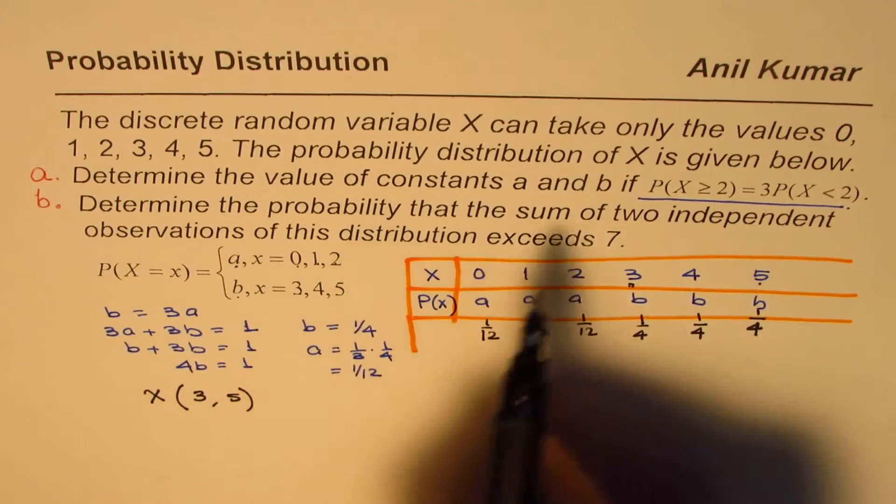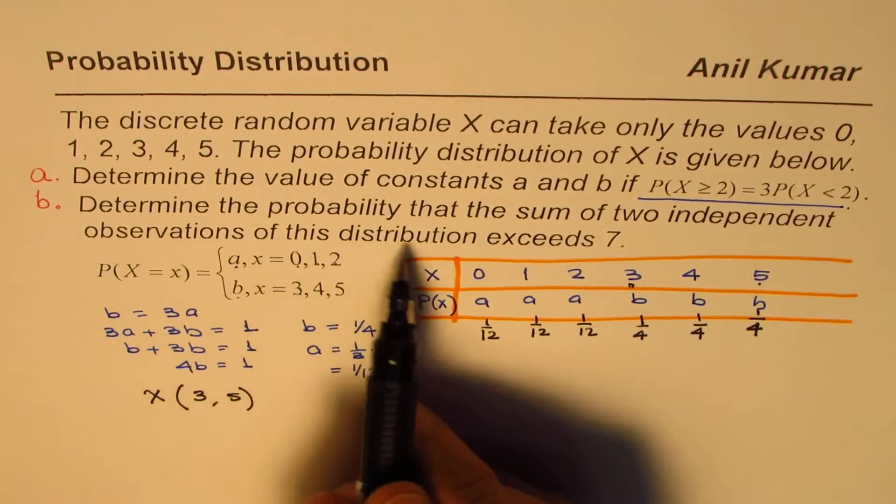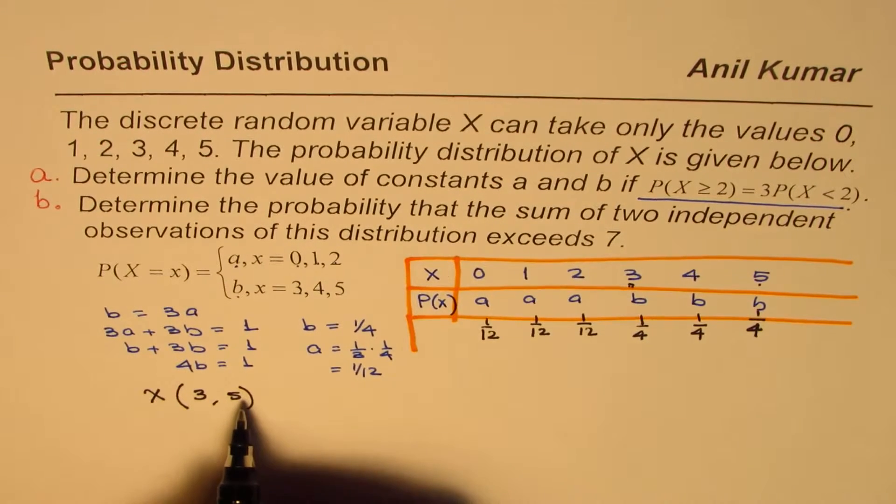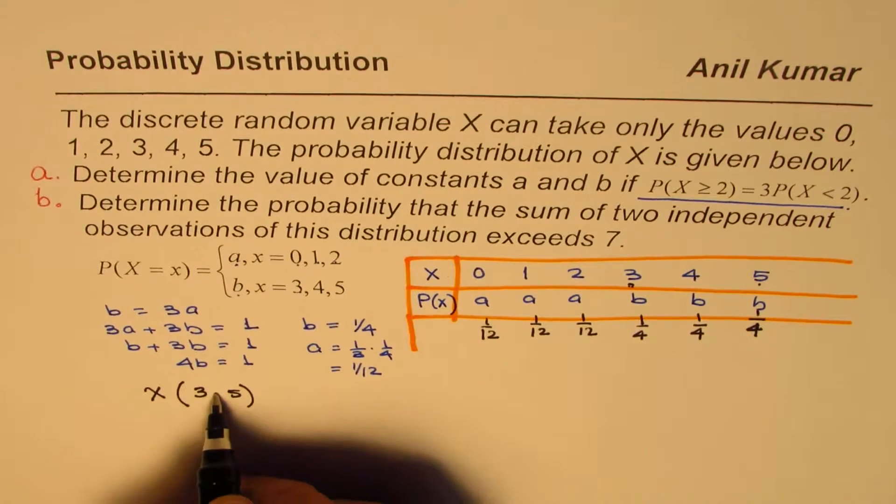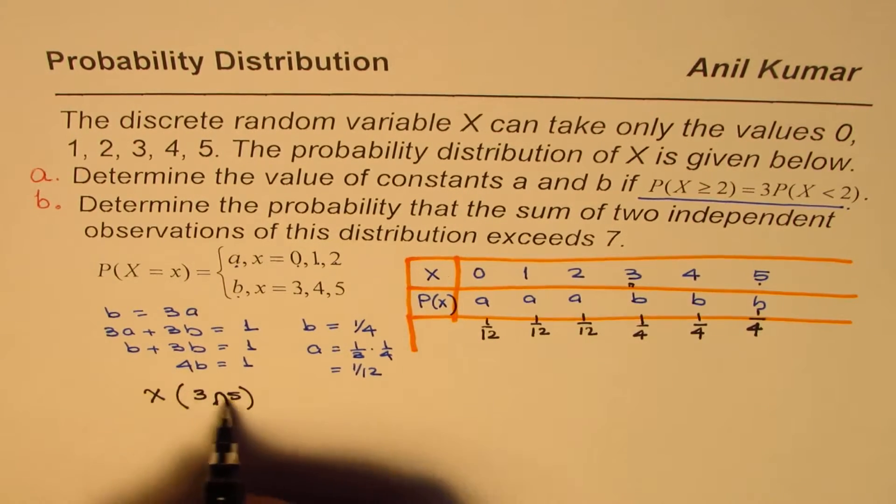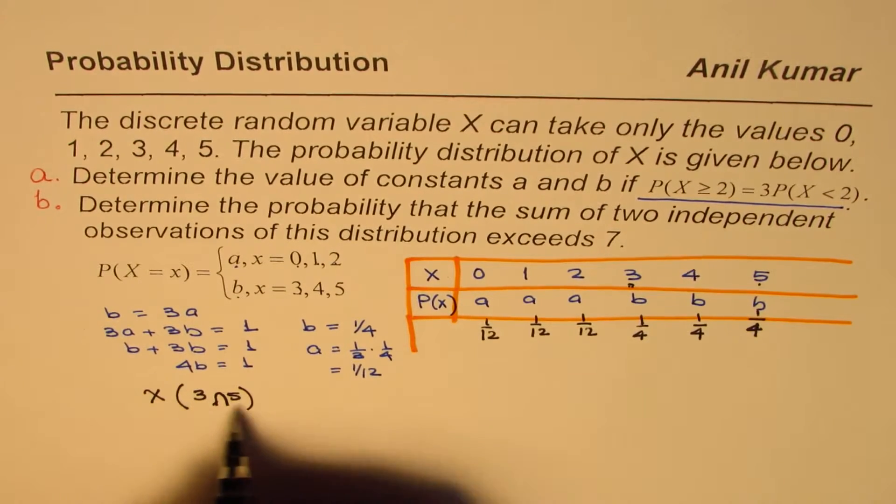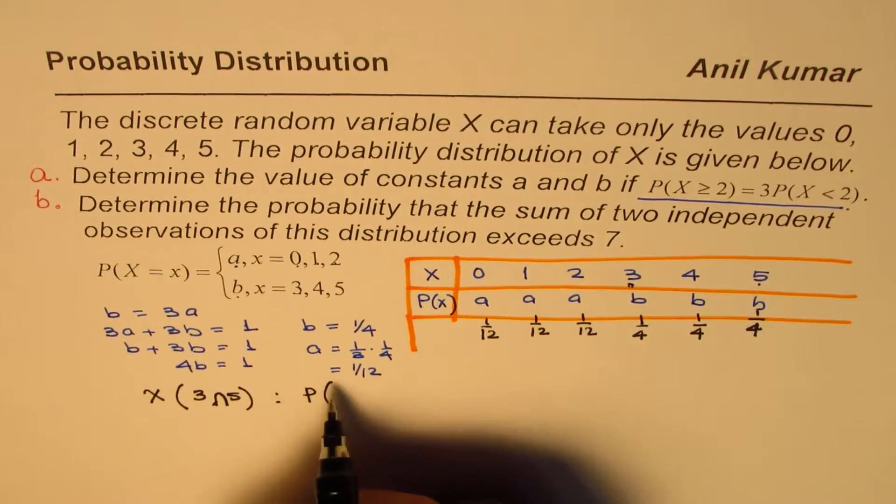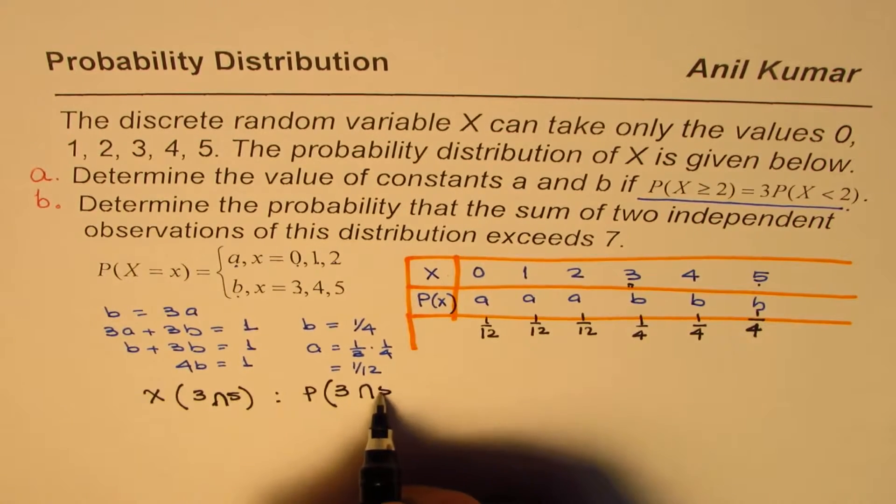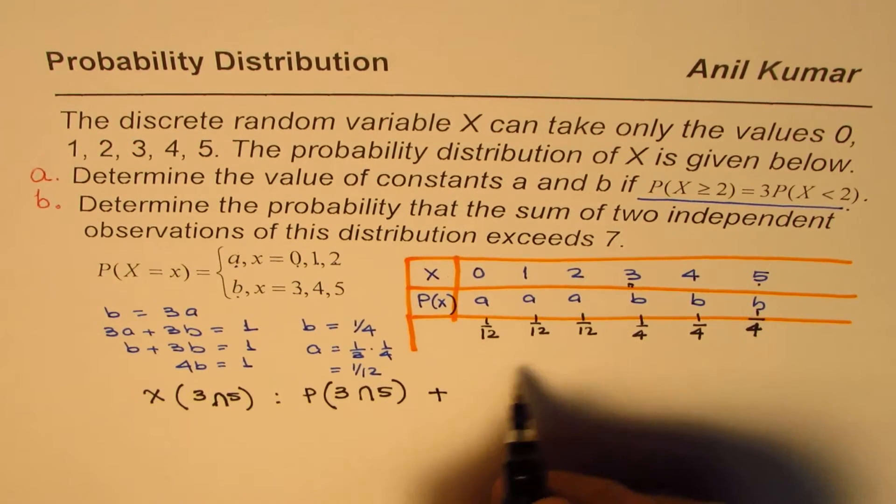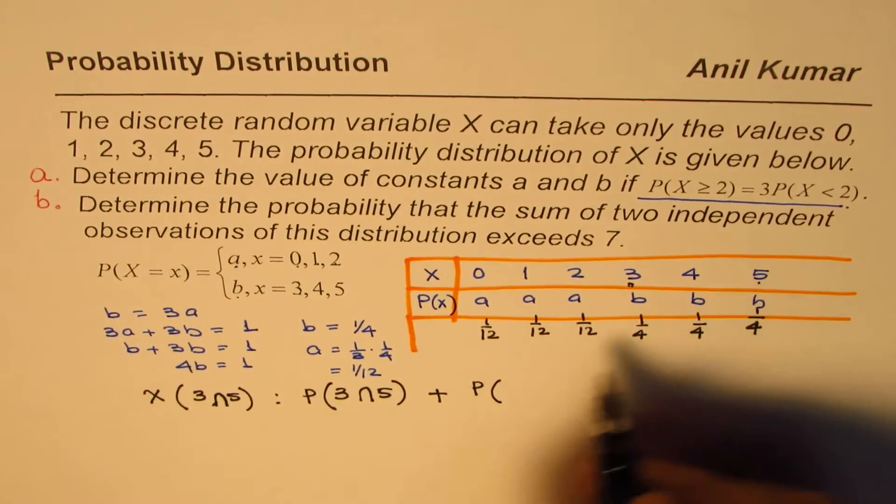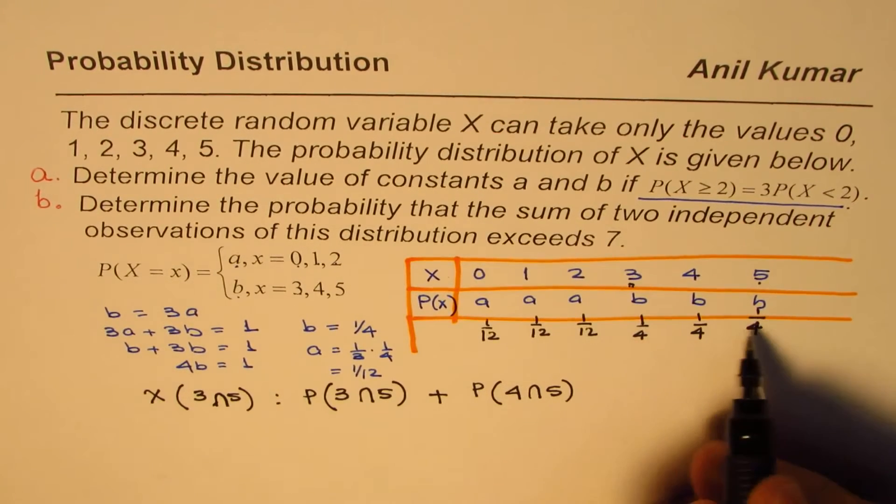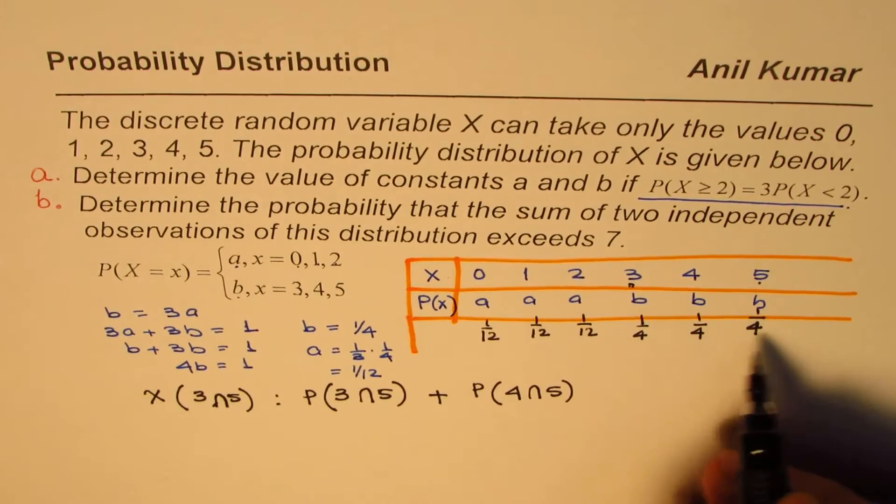So it says, determine the probability that the sum of two independent observations of this distribution exceeds 7. So probability will be probability of this and this. So and means intersection. Let's write like this. So we could write this as, or let me write this as probability of 3 intersection 5, plus probability for 4 intersection 5. Now since they are independent events, we could multiply them. So we could multiply these probabilities.